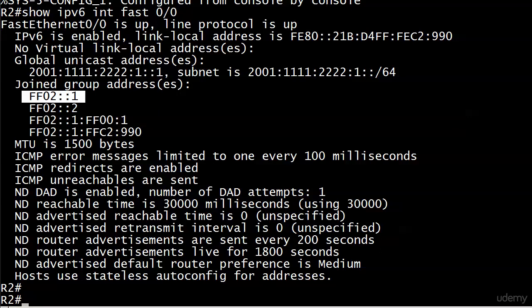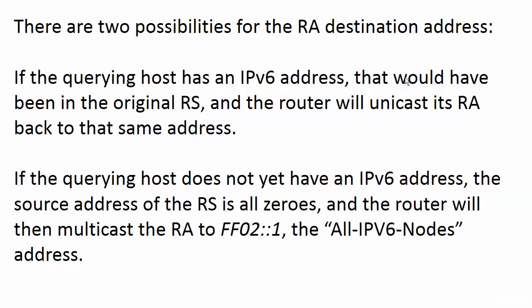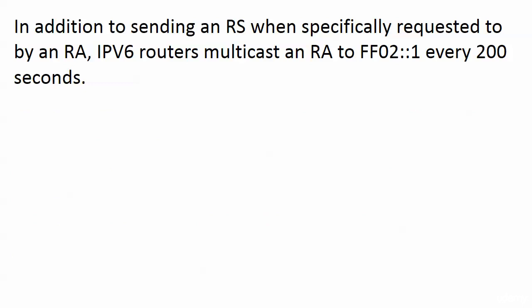FF02::1 is the all-IPv6-host address, and FF02::2 below it is the all-IPv6-routers multicast address. The router also multicasts RAs every 200 seconds — don't ask me why they chose 200, but it's easy to remember. Every 200 seconds, an IPv6 router multicasts a Router Advertisement to FF02::1. It's a little faster for the host to explicitly request one rather than waiting for that 200-second interval.